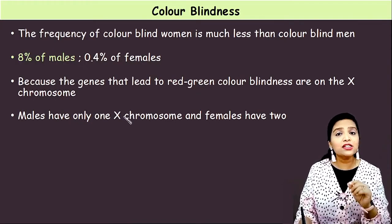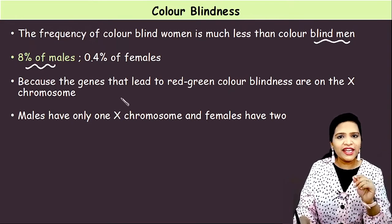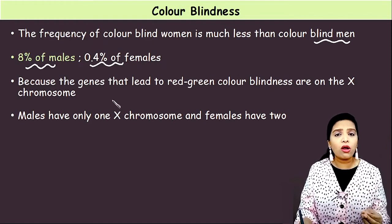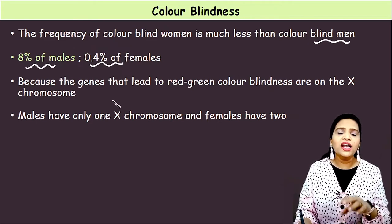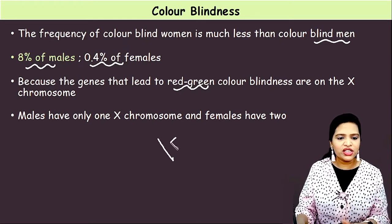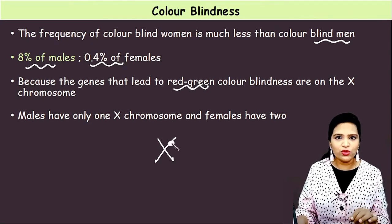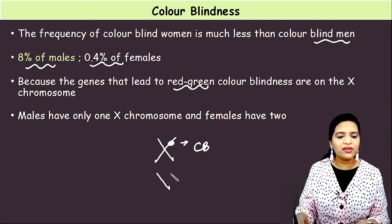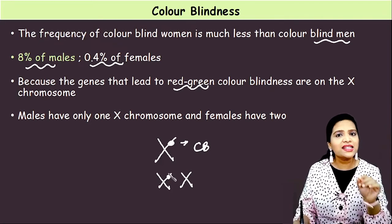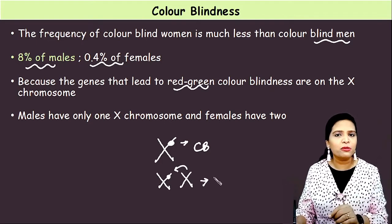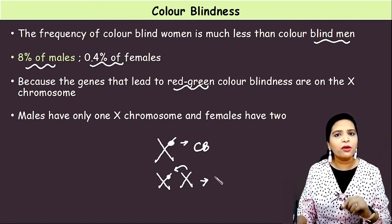The frequency of colorblindness is more among males than females — about 8% in males whereas only 0.4% in females. This is because the genes responsible for the green and red color cone cells are present only on the X chromosome. Males have only one copy of the X chromosome, so if there is a defect in that gene, it ultimately ends in colorblindness. Whereas females have two copies of the X chromosome — if one X chromosome has the defective gene, the other chromosome takes over its function, and the female becomes a carrier rather than an affected individual.